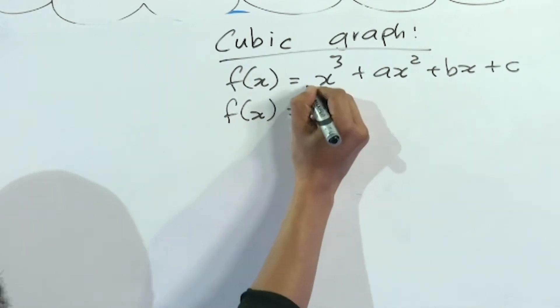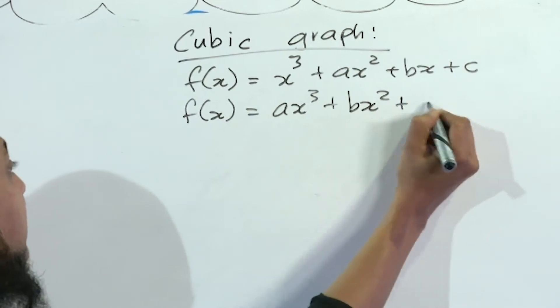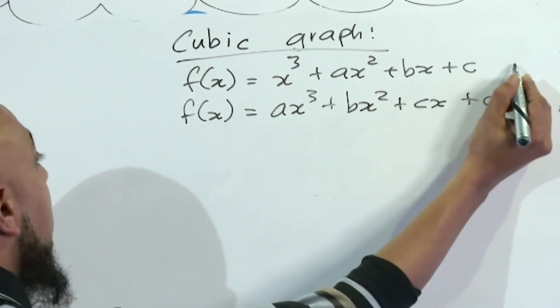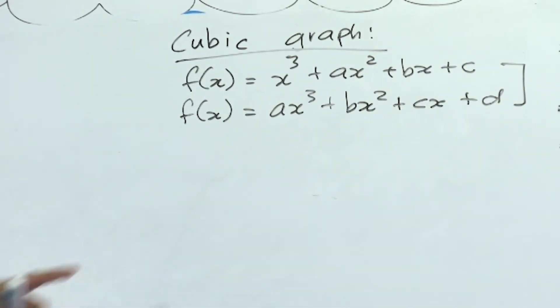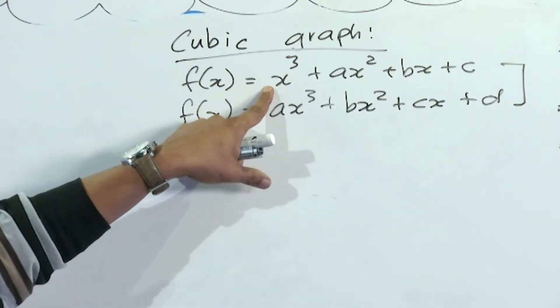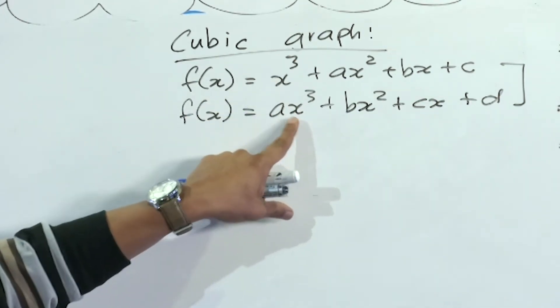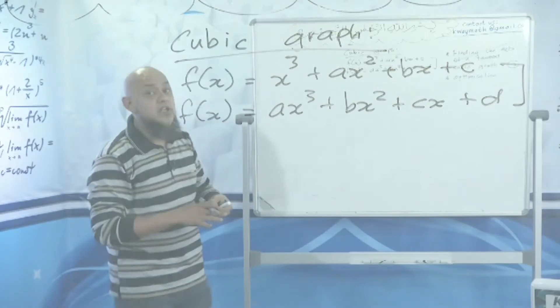These two are exactly the same. In the first one, the coefficient of x³ is 1. Here, the coefficient of x³ would be a different value—it could be greater than one or it could be a fraction.